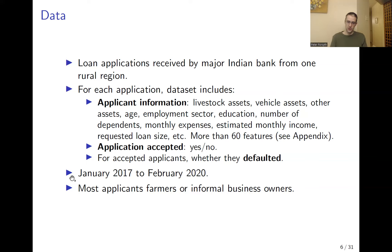The time range from which the data is drawn ranges from January 2017 to February 2020. The author notes that most of the applicants are farmers or owners of informal businesses.